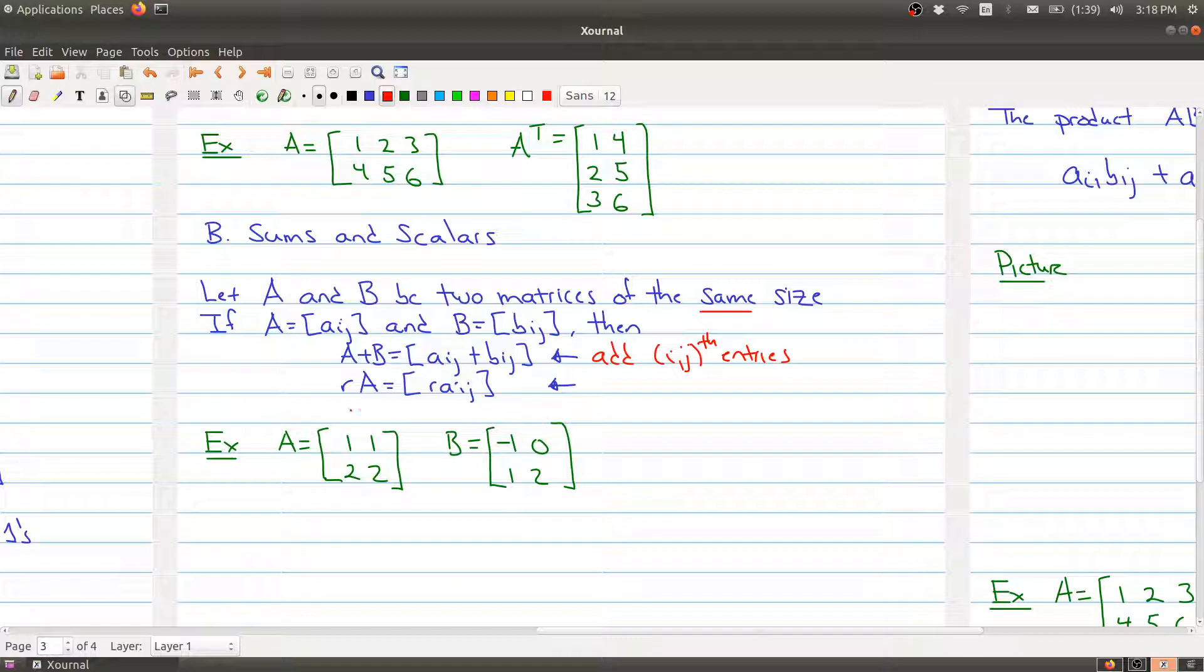We can also do scalar multiplication. Here I'm taking a matrix and multiplying it by a scalar R, a real number. What we're doing is multiplying all entries by R. As a simple example, I have two matrices of the same size, both two by two. A plus B is formed by looking at each spot and adding the entries together. One plus minus one gives me zero, one plus zero gives me one, two plus one gives me three, and two plus two gives me four.